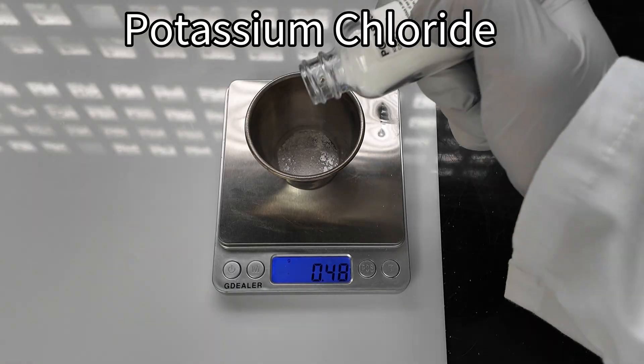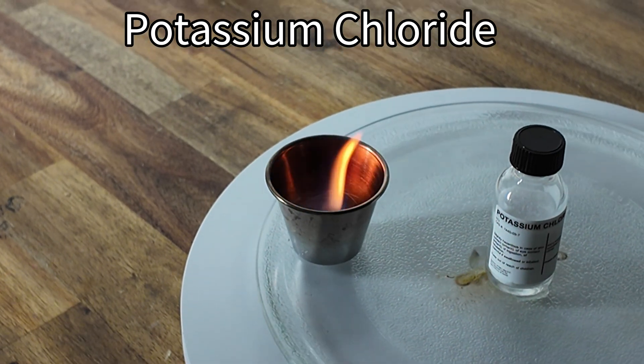Next up, we have potassium chloride. When this one is burned, we can see a lilac-white-purple flame.